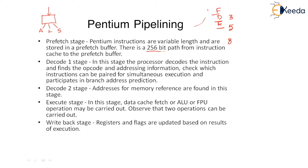As the current instruction is being executed in the ALU, we are going to fetch a total of 8 next instructions. So we have a queue of 8 instructions within the processor.